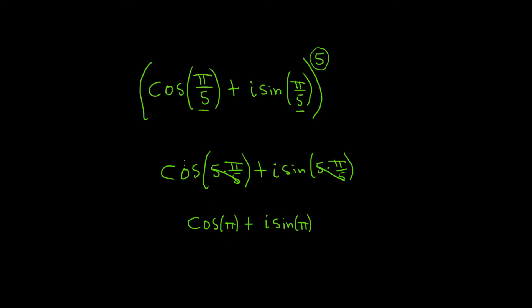Now in order to get the answer, if you don't have these memorized, what you can do is think about the unit circle. On the unit circle every single ordered pair can be written as cosine theta comma sine theta.